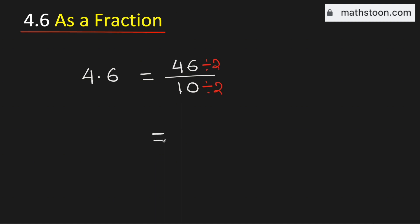By doing so, we will get 23 over 5. As both the numbers are prime numbers, this fraction cannot be simplified further. Therefore, 4.6 as a fraction is equal to 23 over 5, and this is our final answer.